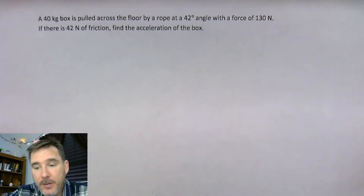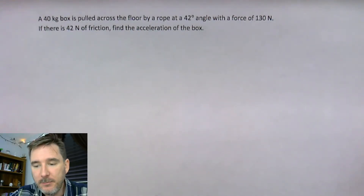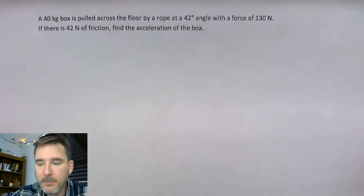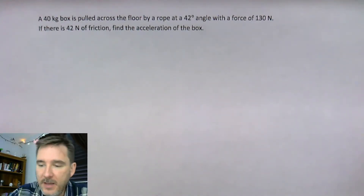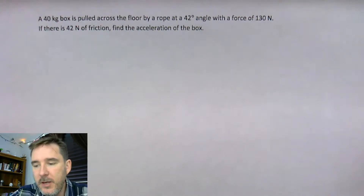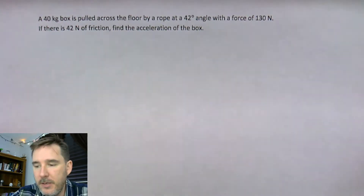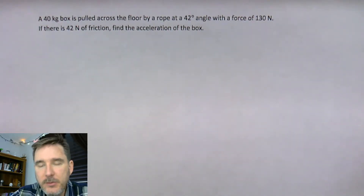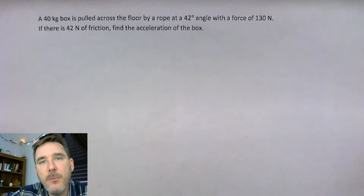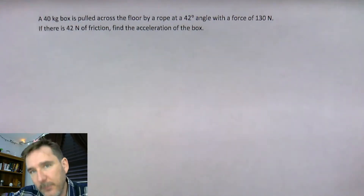In this situation we have a 40 kilogram box being pulled across the floor by a rope at a 42 degree angle with a force of 130 newtons. If there's 42 newtons of friction, we need to find the acceleration of the box.